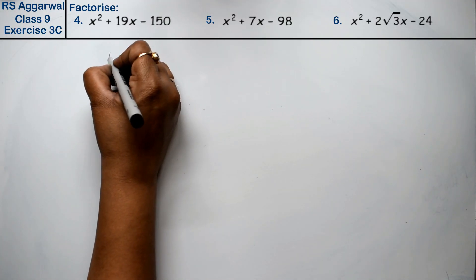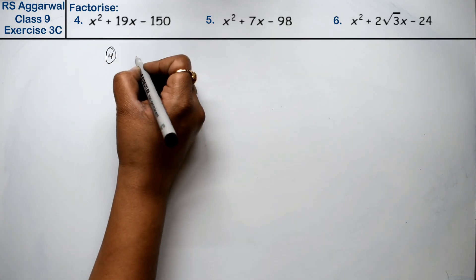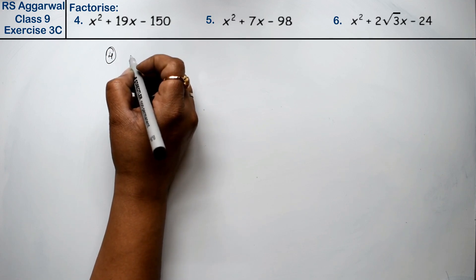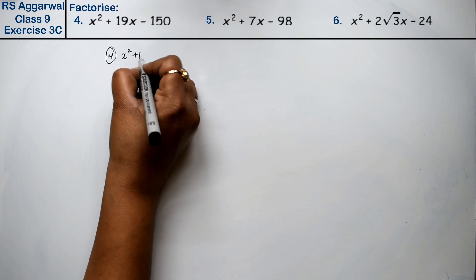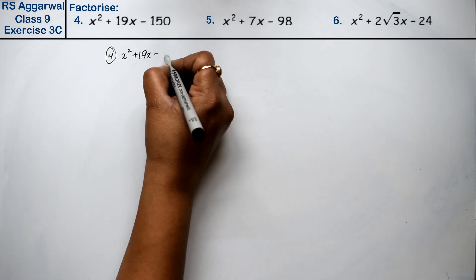Let's do question number 4 of exercise 3C, that is factorization of polynomial. Question number 4 is x square plus 19x minus 150.